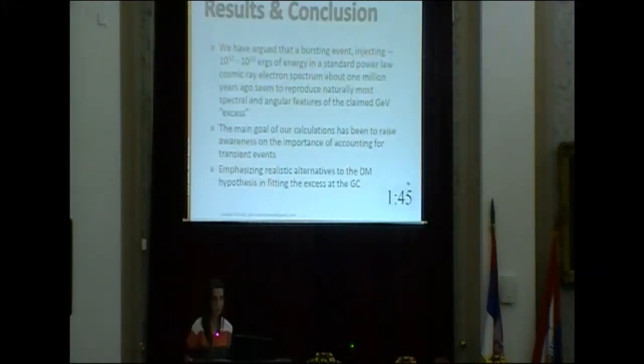A quick question about the last slide regarding transient sources: what is meant by transient sources? Transient events would be any events that could provide a power-law electron spectrum that then diffuses through the medium — any type of such bursting event. In our model we did not specify what such an event could be, but it could be an activity of the supermassive black hole that provides such an electron spectrum, perhaps the infall of gas or any sort of violent activity around the galactic center.